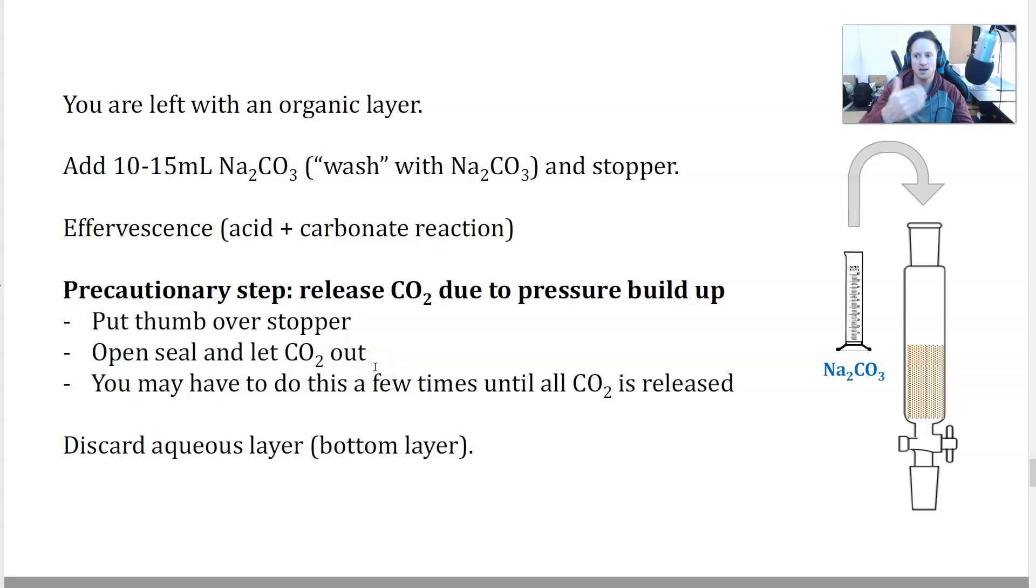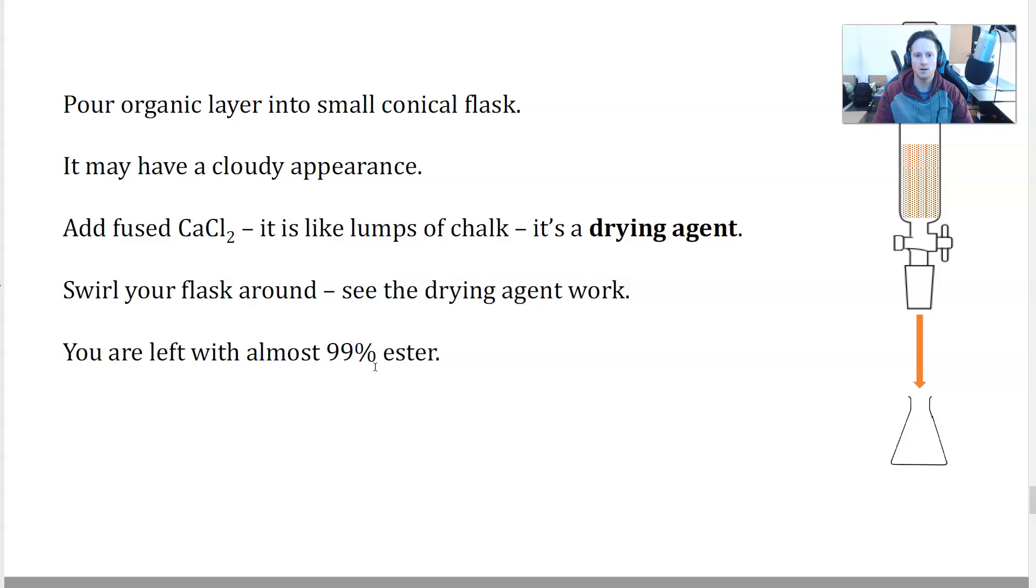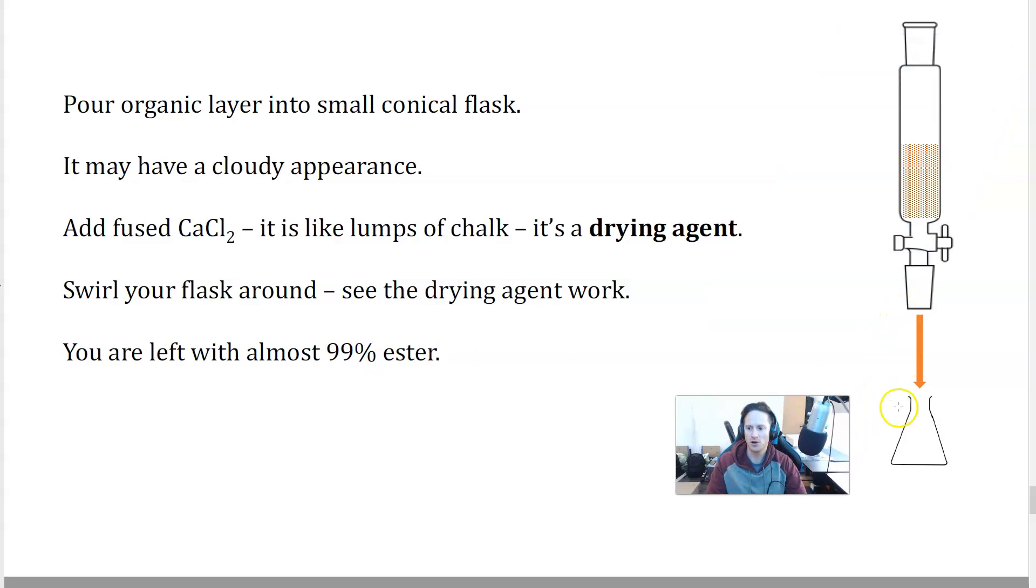You pour the organic layer into a small conical flask. It probably has a cloudy appearance. You add fused calcium chloride, kind of like lumps of chalk. That's called a drying agent. So that's going to absorb all of the leftover water. Swirl the flask. We've got almost 99% ester.